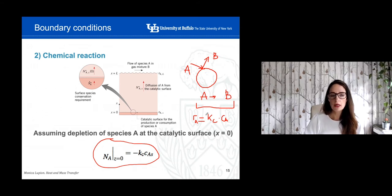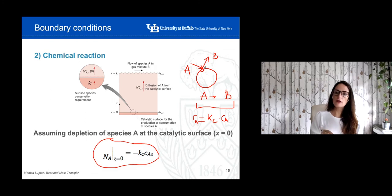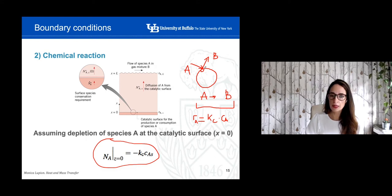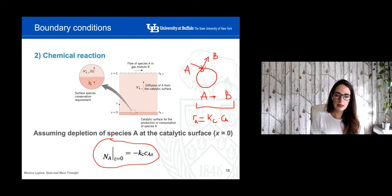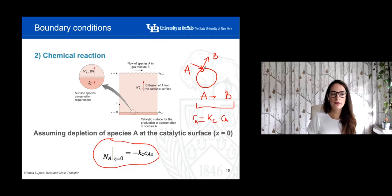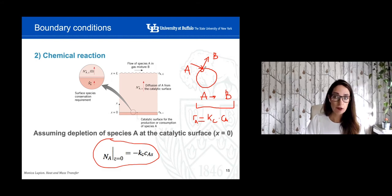Usually what we are going to assume is that once particle A reaches the surface of the catalyst, 100% of all the particles reaching the surface will be converted into element B. So we're going to assume that all species A at the catalytic surface will be depleted. I know this is hard to understand — it's probably better if we see an example. There is a very good example about catalytic reactions and how to deal with the general equation when we have a catalytic surface.